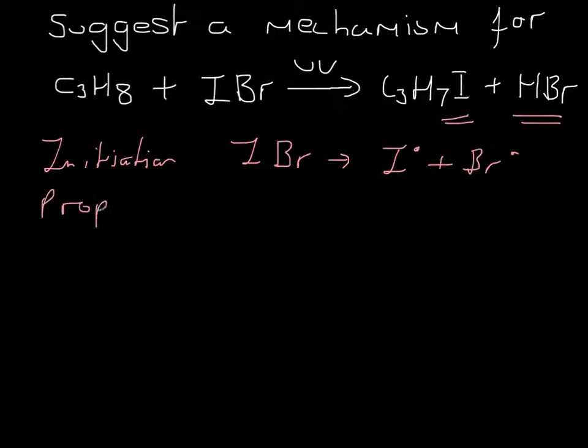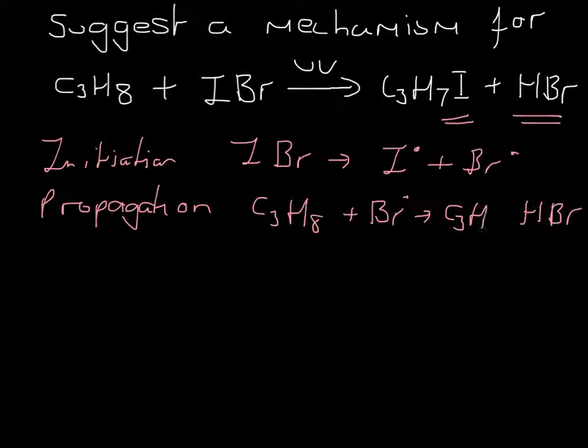The next step is my propagation. Now this is where you have to think carefully. You're going to start with C3H8. Now the first step you are going to make as your product HBr. So the radical that you need to use is Br dot. And then that would give you C3H7 dot.